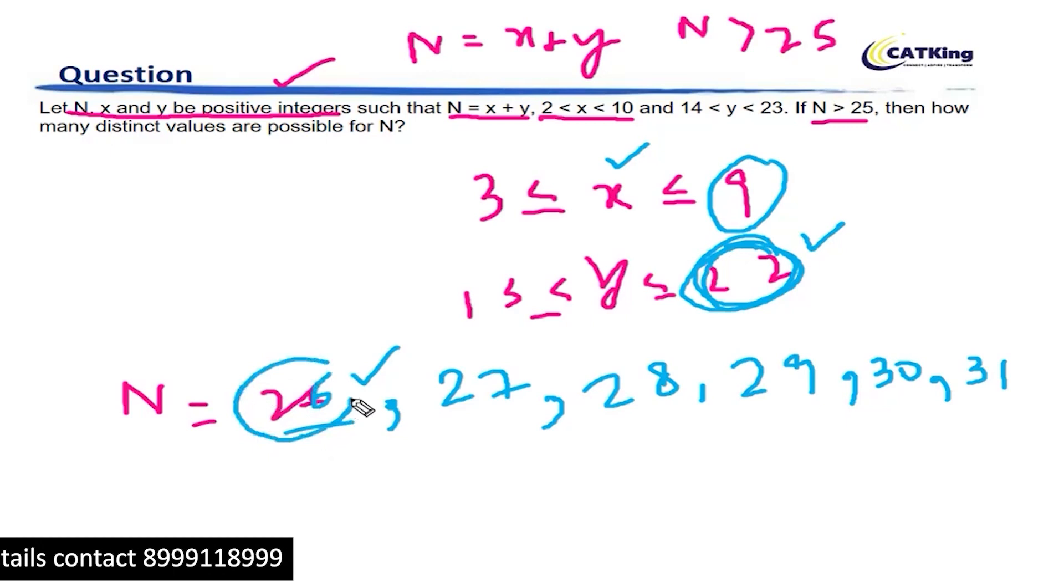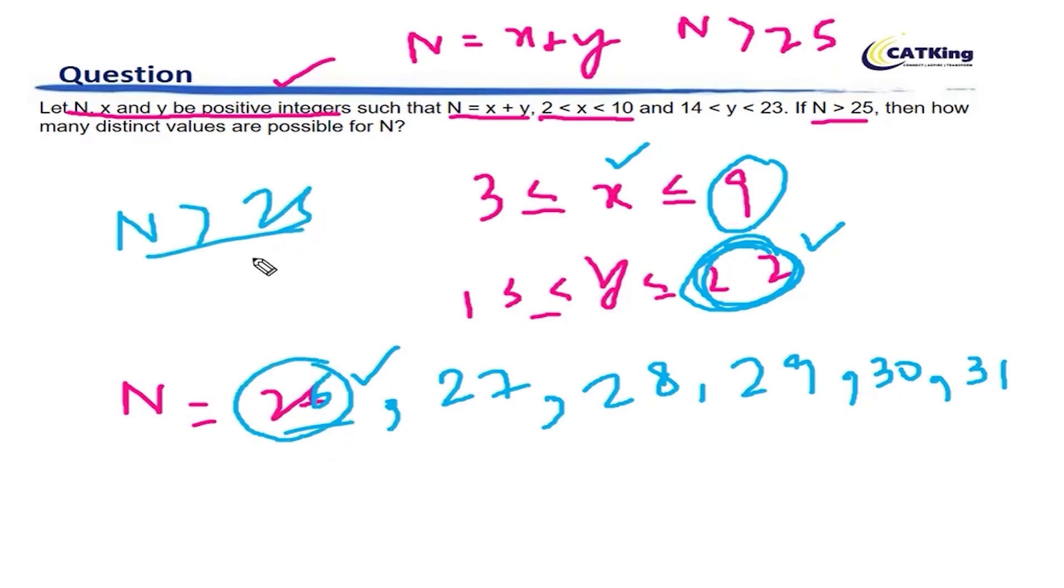And why did I start with 26? Because N is given to be greater than 25, so I can't take any number less than or equal to 25. So how many values of N are possible?